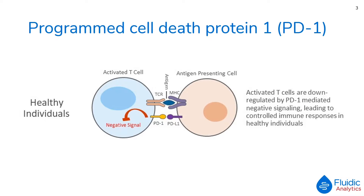So let's take a look at the functions of these proteins. Programmed cell death protein 1, or PD-1, is a protein located on the surface of many immune cells such as T cells and macrophages. Its role is to regulate the immune system's response to the cells of the human body by down-regulating the immune system and promoting self-tolerance by suppressing T cell inflammatory activity. PD-1 is stimulated by PD-L1, a transmembrane protein that is expressed by many cells including muscles and nerves.